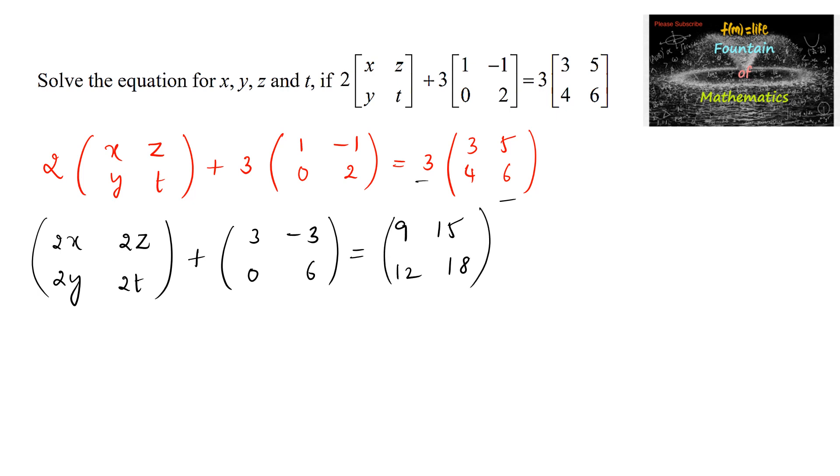And adding these two matrices on left side, we will get 2x plus 3, 2z minus 3, 2y plus 0 and 2t plus 6.